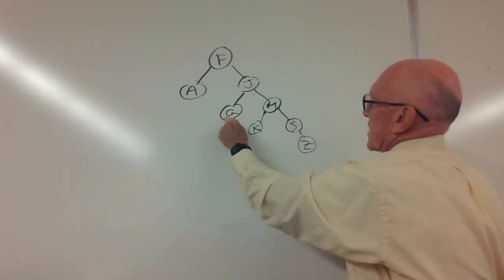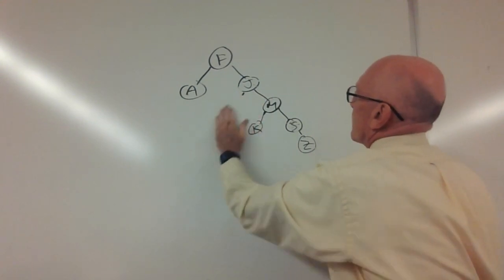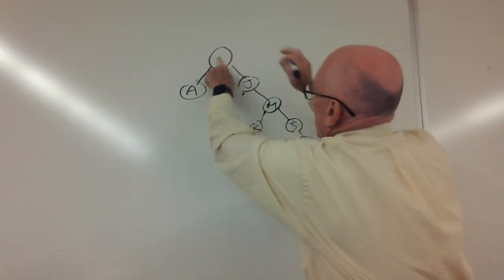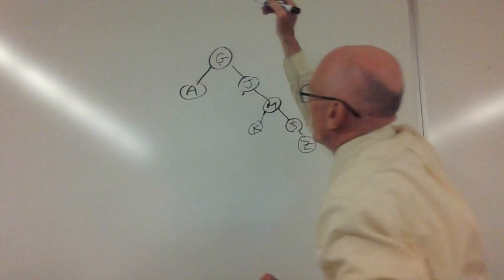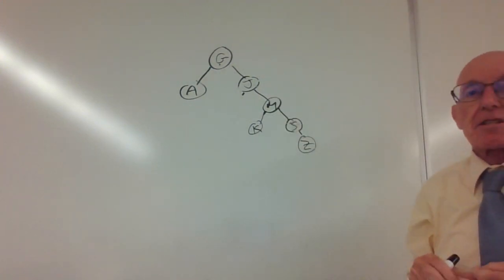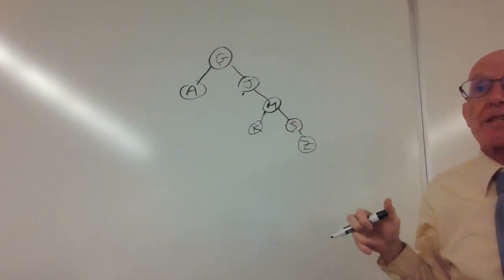Then we want to splice it out, and then the G goes in here. And again, everything still has the binary search tree property.